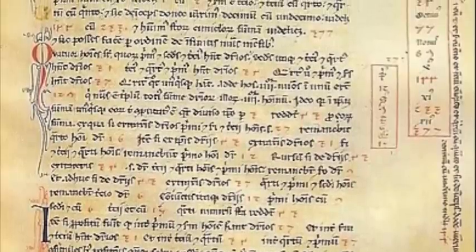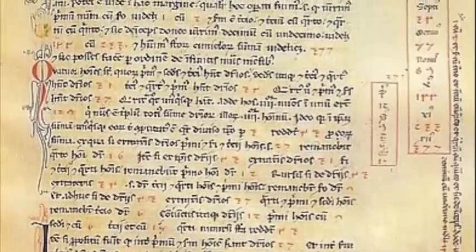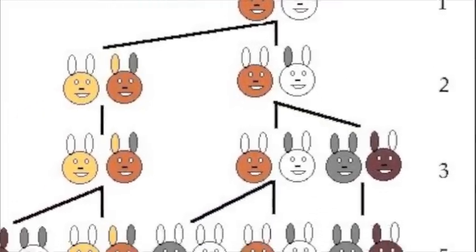Leonardo's book, Liber Abaci, also posed and solved the problem regarding the growth of a population of rabbits based on idealized assumptions. The solution generation to generation was a sequence of numbers later known as Fibonacci numbers.